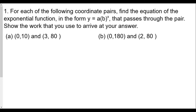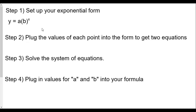We have two pairs: (0, 10) and (3, 80) for part a, and (0, 180) and (2, 80) for part b. To solve these, our steps are: step one, set up the exponential form y = a · b^x; step two, plug the values of each point into the form to get two equations; step three, solve the system of equations; and step four, plug in the values of a and b into your formula.